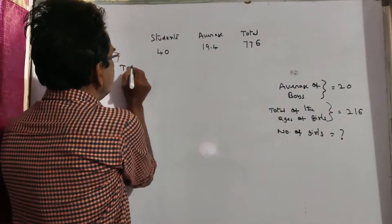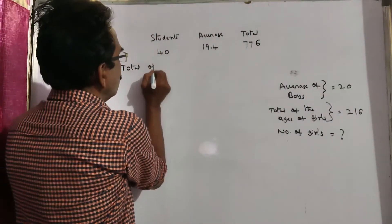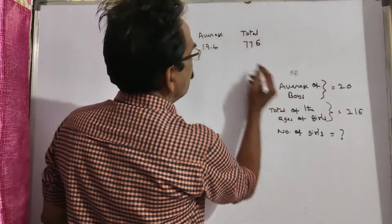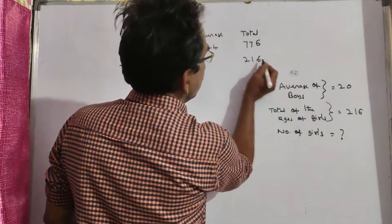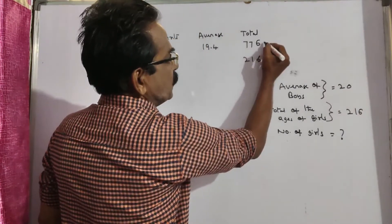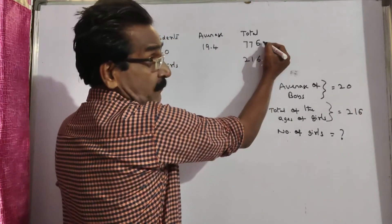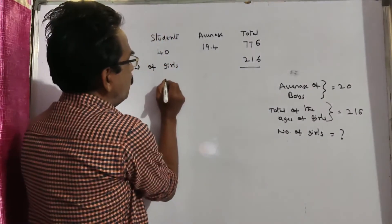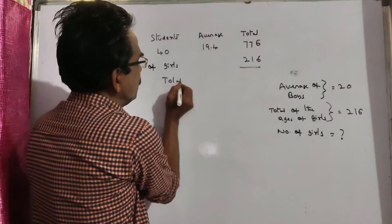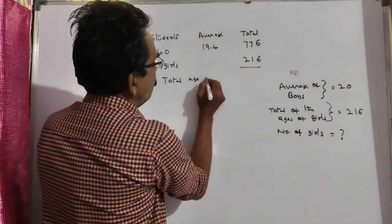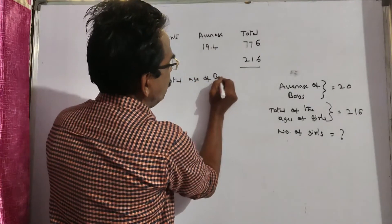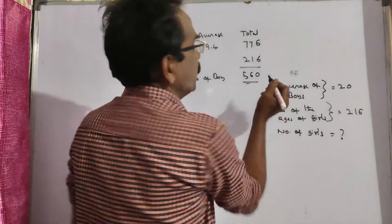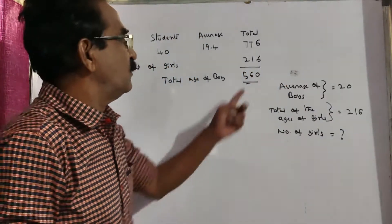Since total of girls is given, that is 216, so this minus this - this is total age of total students, this is the total age of girls - so total age of boys is equal to 560. Total age of boys is equal to 560.